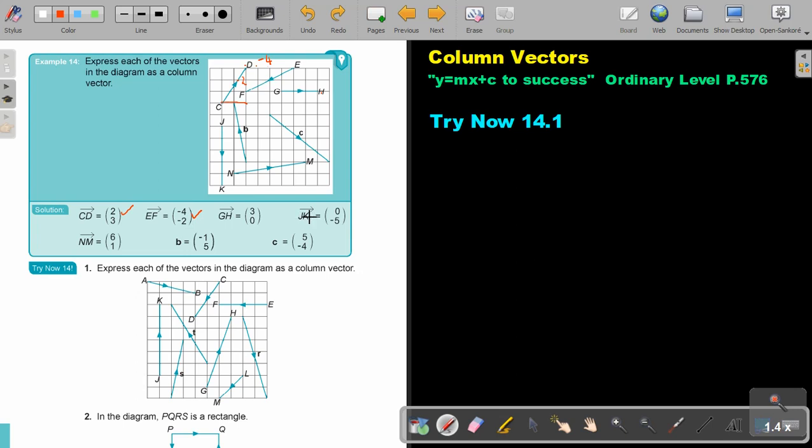And then JK, let's just see where's JK. So it's 1, 2, 3, 4, 5, only a vertical movement, that's negative 5. So 0 horizontal, negative 5.